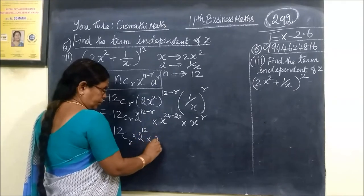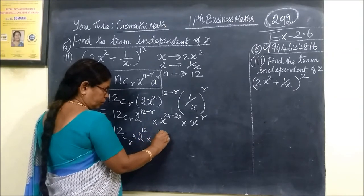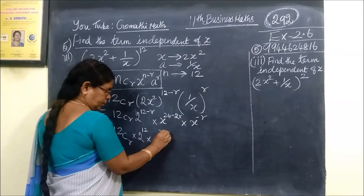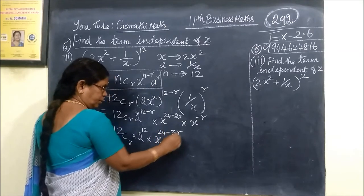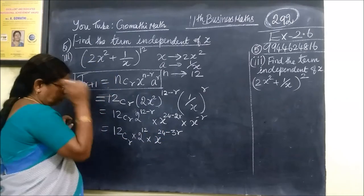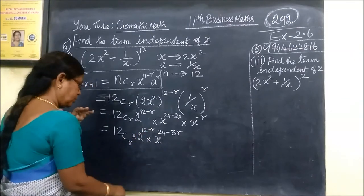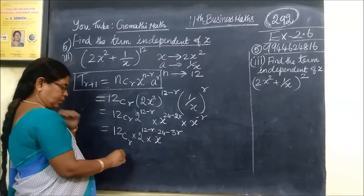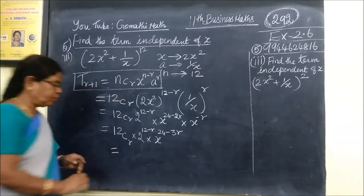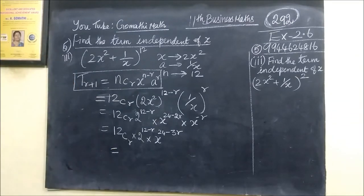Into x power 12 minus R minus R, which is x power 24 minus 3R. This is the general term.